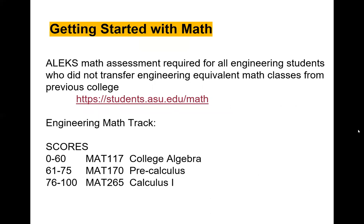For those who have not transferred equivalencies for Math 117 (college algebra), Math 170 (pre-calculus), or any calculus listed in the major map, you will be required to take the ALEKS Math Assessment. Scores of 0–60 place you in college algebra; 61–75 in pre-calculus; 76–100 in Calculus 1. There is no testing out of math at ASU. If you took brief calculus as a business major, that does not count — you still need the ALEKS assessment unless you have Math 170 as a prerequisite.